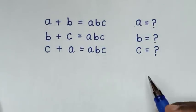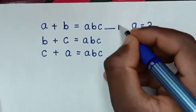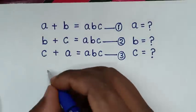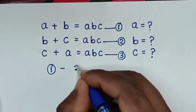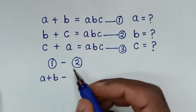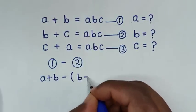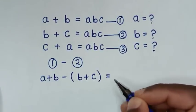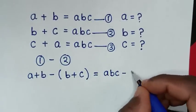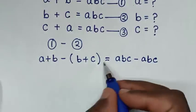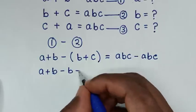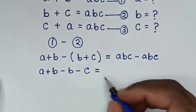We start by labeling these as equation 1, equation 2, and equation 3. Then we take equation 1 minus equation 2. From equation 1 the left side is A plus B, minus equation 2 left side which is (B plus C), equal to ABC minus ABC.